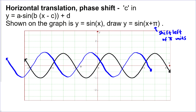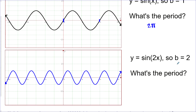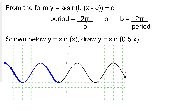The b value controls the horizontal stretch. For y = sin x, b = 1, so the period is 2π. For y = sin(2x), b = 2, and the period is π. The b value is not the period, but it's related: period = 2π / b. Conversely, b = 2π / period. If working in degrees, the period = 360° / b.